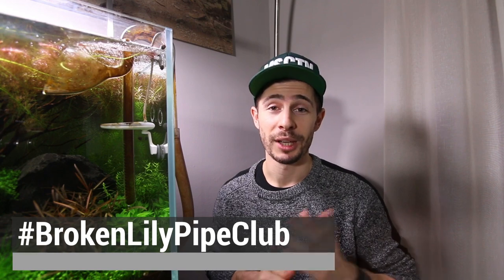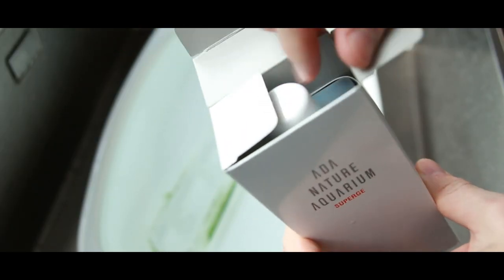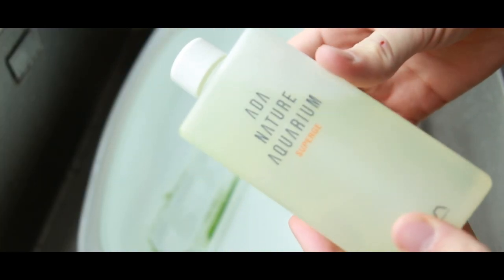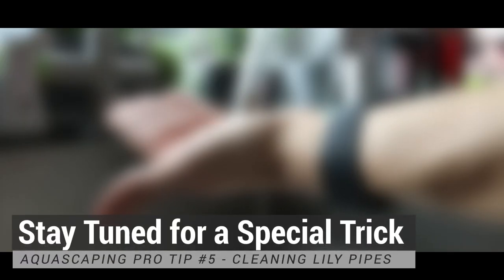I just say hashtag broken lily pipe club. Anyway guys, the final ingredient to cleaning lily pipes is a bleach or chlorine solution. You can use something from the aquarium supply or anything from the supermarket, it will work just as well. And then I have this really special trick for you but I'm gonna show you that afterwards. So now let's take the lily pipes apart and go over to the sink.